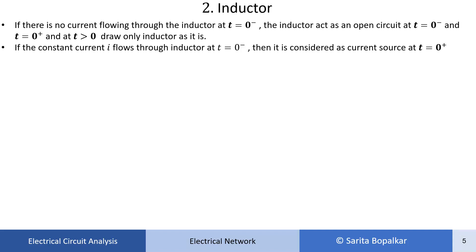For the inductor, it is an energy storing element, so we should consider initial conditions — that means we have to check whether any current flows through the inductor or any energy is stored in the inductor before switching. If there is no current flowing through the inductor at t equal to 0 minus, the inductor acts as an open circuit because current is 0. There is no path to flow the current, so we represent it as an open circuit at t equal to 0 minus, t equal to 0 plus, and for t greater than 0 we draw only the inductor.